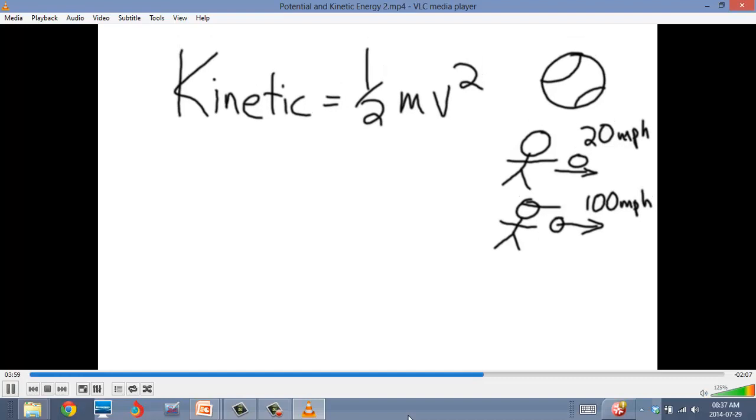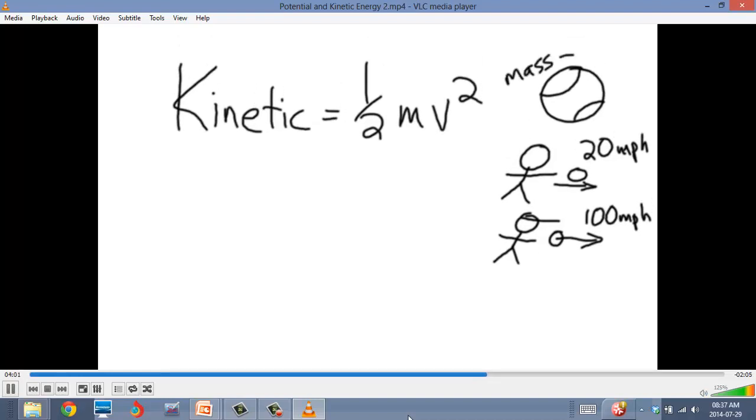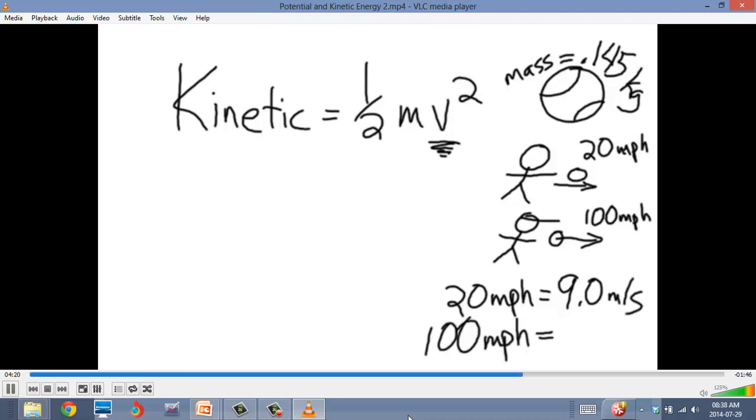First of all, we have to figure out the mass of the baseball. The mass of the baseball is 0.145 kilograms. And since we're doing kinetic energy, the only other value that we need is the speed. And so if you throw a 20 mile an hour pitch, that's roughly 9.0 meters per second. Remember, on all of these, we always have to convert it to meters per second if it's a velocity.